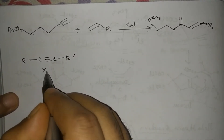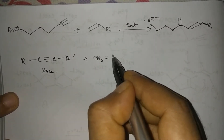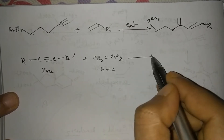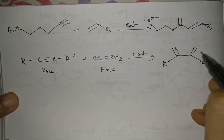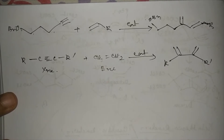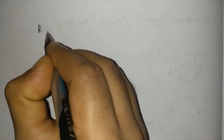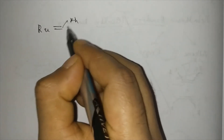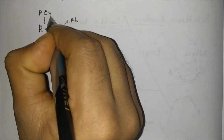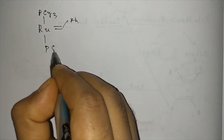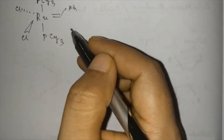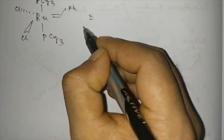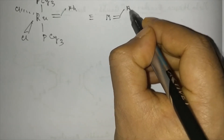This is an enine which reacts with ethylene in the presence of a catalyst, and the product will be this. The structure of Grubbs catalyst has an alkylidene group and two phosphine ligands. This is the general structure of Grubbs catalyst, and it can also be represented in a shortened form.